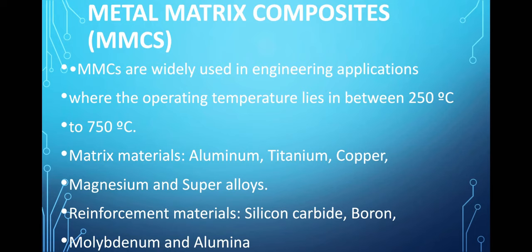Metal matrix composites are also used in engineering and industrial applications. The operating temperature range for metal matrix composites lies between 250 degree Celsius to 750 degree Celsius. Matrix materials include aluminum, titanium, copper, magnesium, and super alloys. Reinforcement materials include silicon carbide, boron, molybdenum, and alumina.